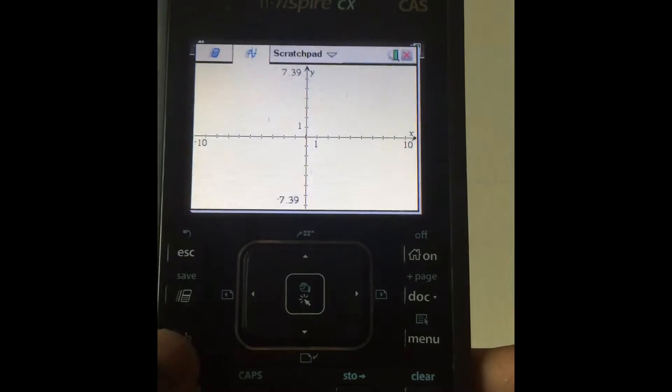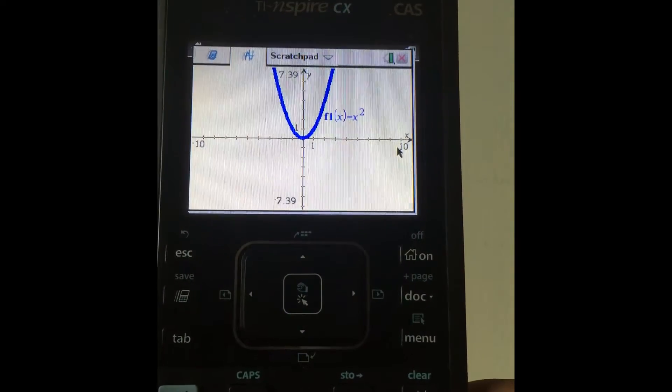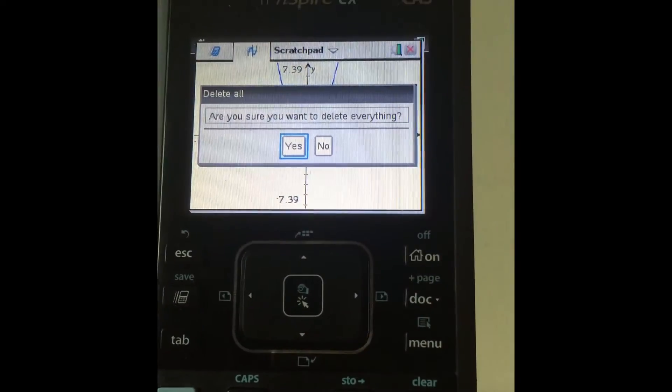To plot the next graph, press tab. So it opens this and then type your graph. To delete all the graphs, just repeatedly press delete and then this shows up and then just press yes.